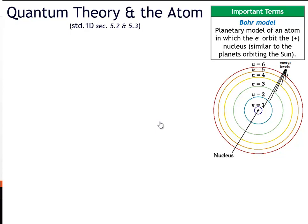We're going to talk about the Bohr model — the Bohr model picture here on the right-hand side. Essentially, it's like this planetary idea of what the atom looks like with the electrons in it. Now, I want to give you a little disclaimer here: this is not the appropriate picture of what an atom looks like, especially the electrons. It's a more complex idea, yet we teach the Bohr model because it helps simplify an understanding of what we commonly see, such as color, which we'll eventually get to.